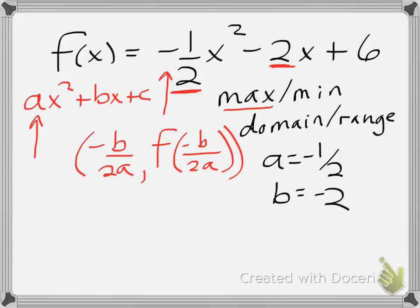I can say that opposite of b would be a positive 2 over 2 times negative one half. Which means 2 over negative one, so that means my x value of my vertex is negative 2. That's what my opposite of b over 2a tells me, the x value of my vertex.